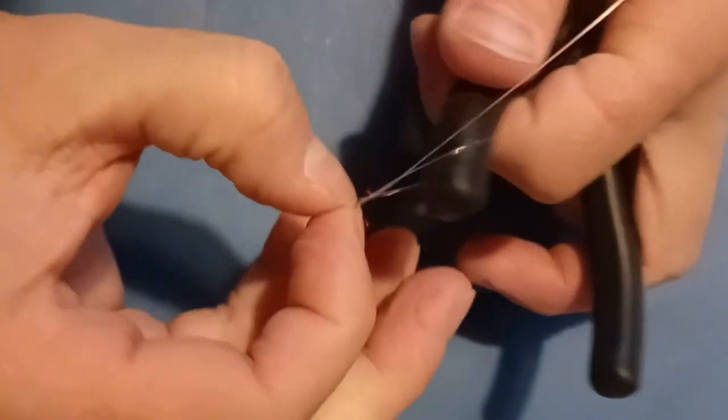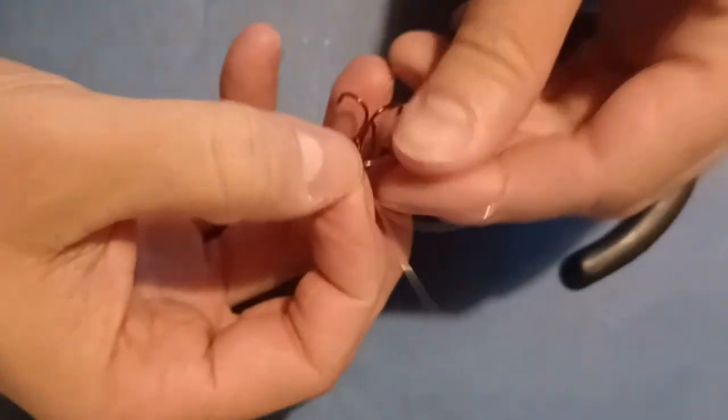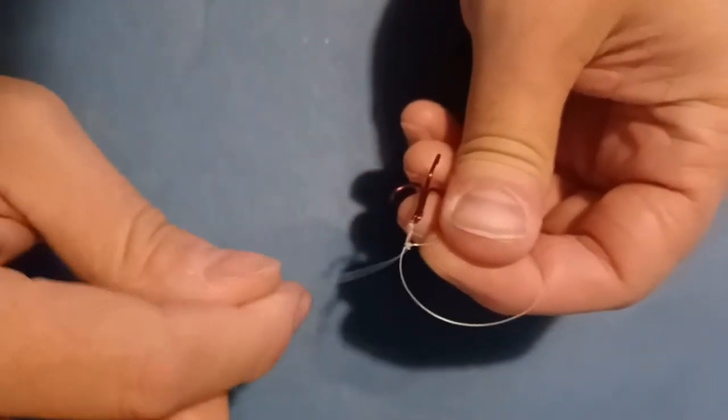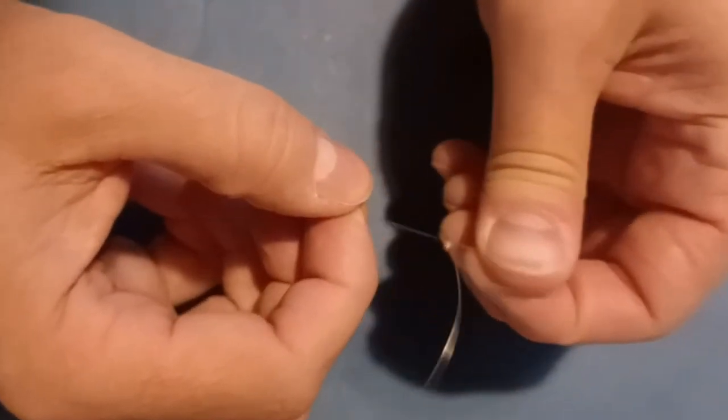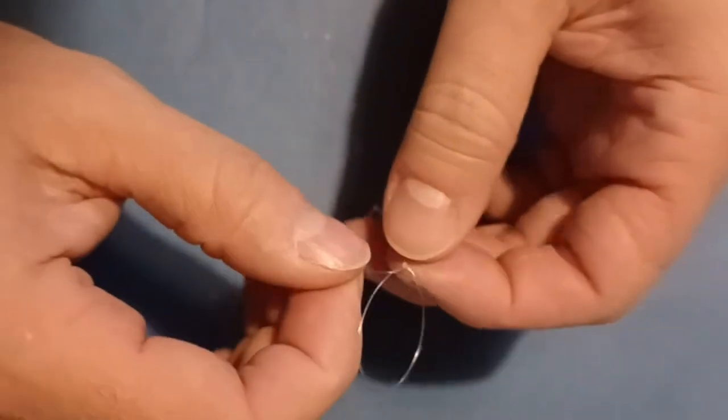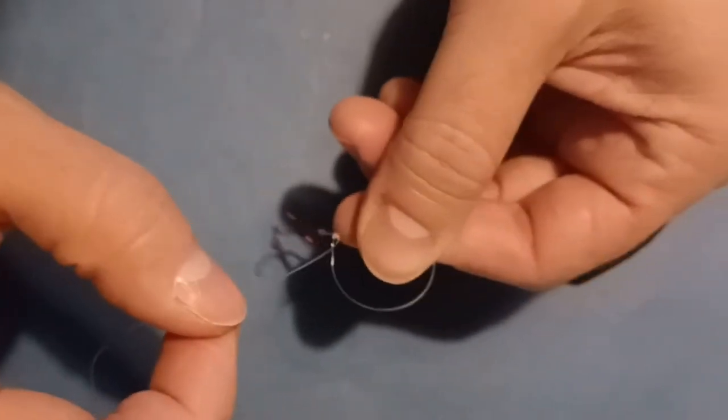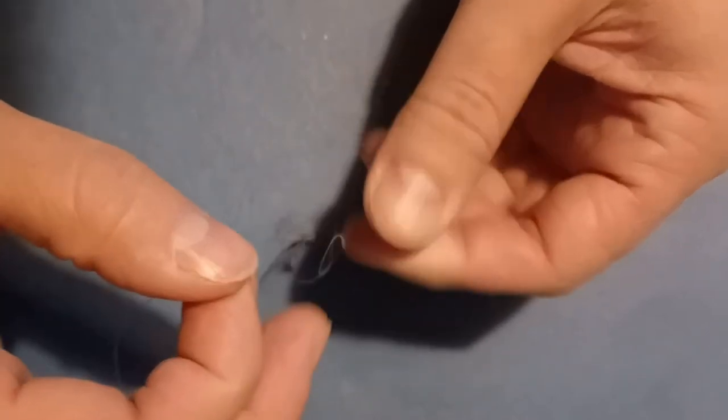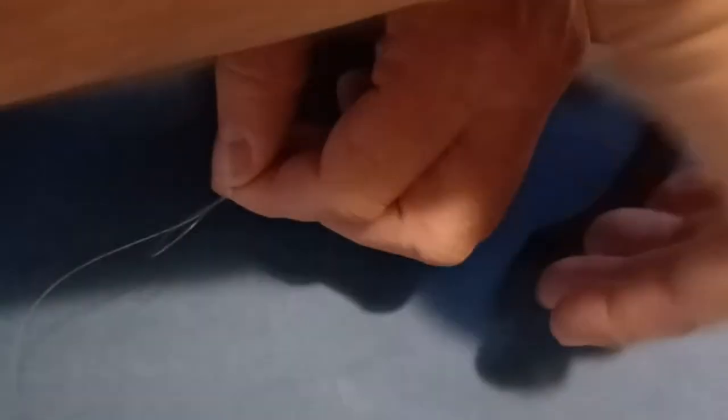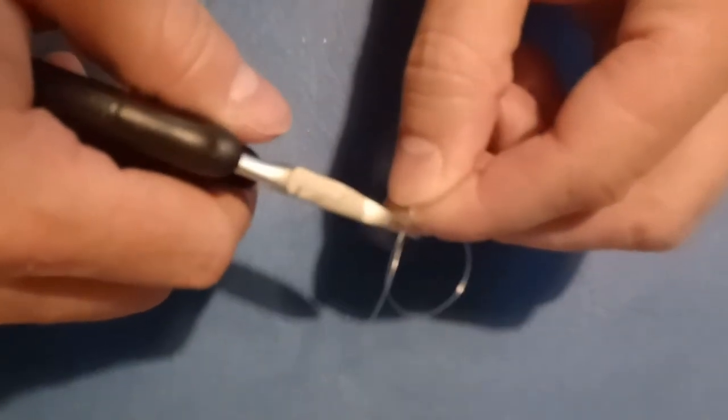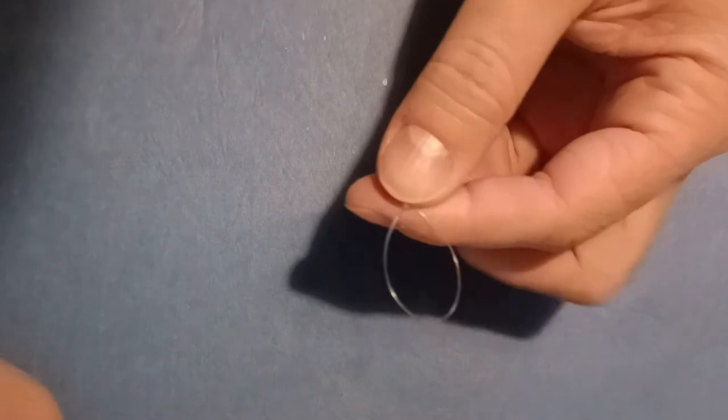And you'll see now that the overhand knot has butted up against the slipknot and has created just one knot there. And so now you have your loop with the slipknot on it. And that slipknot is not going to come undone now under tension. And so at this point, I simply take my snips and cut off the tag end. And there you have it.